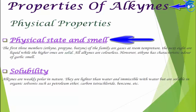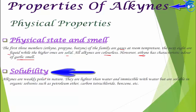Next, the properties of alkynes — first, physical properties. Regarding physical state and smell: the first three members — ethyne, propyne, and butyne — are gases at room temperature. The next eight members are liquids, and higher ones are solids. They are all colorless, and ethyne has a characteristic garlic-like smell.